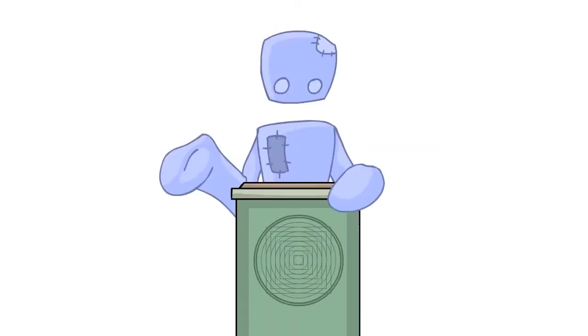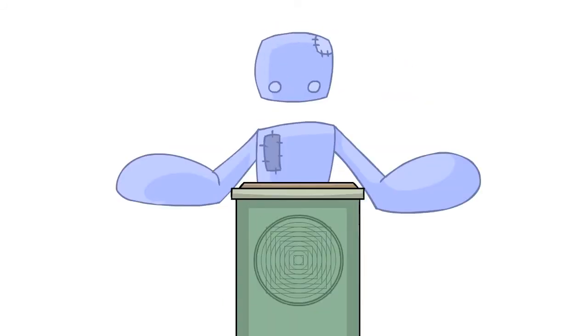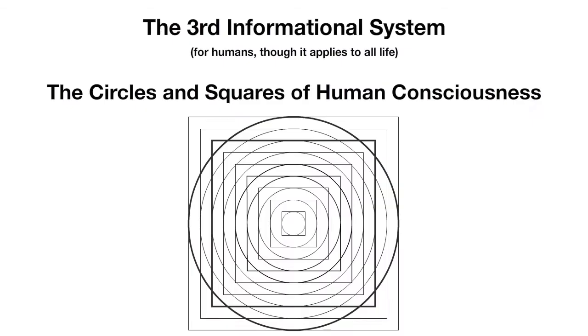Today, we will look at the third system. The fruit of life will reveal itself in the process. We'll call this system the circles and squares of human consciousness. It is what the Chinese called circling the square and squaring the circle.